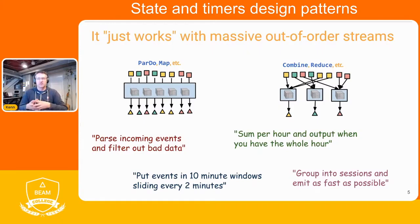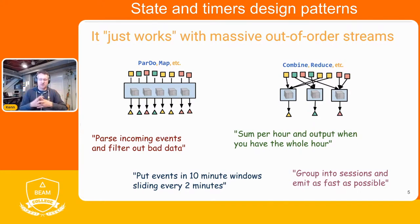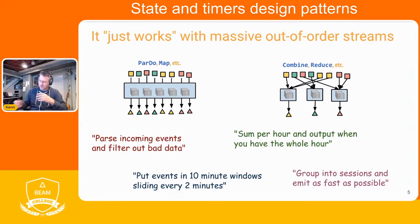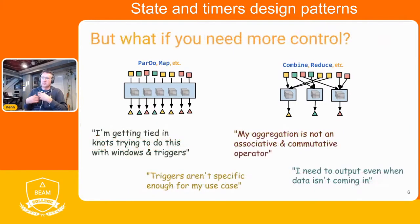These are use cases that work in Beam without you having to do very much — parsing incoming events and filtering bad data, super easy. Grouping elements into sessions involves some more advanced windowing in Beam. But the basic idea of saying: we've got elements, they come in, I choose how I'm going to group them, I group them, and then I have some output and do some aggregation — that works really well with Beam's PCollection and windowed PCollection model.